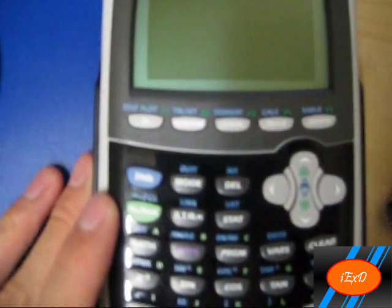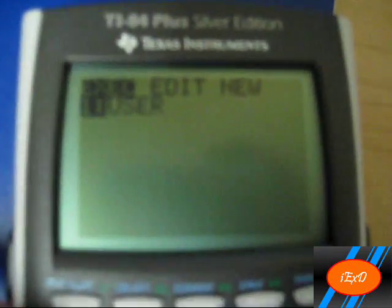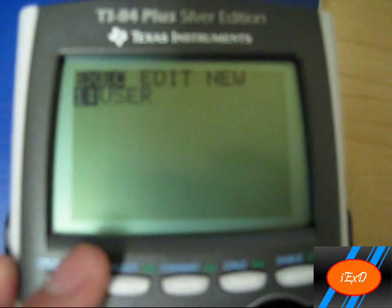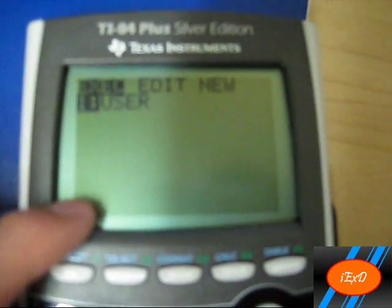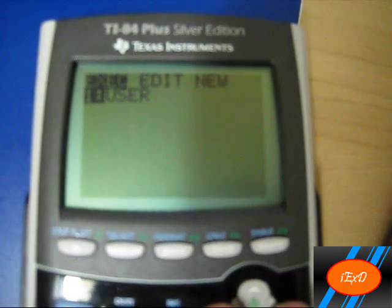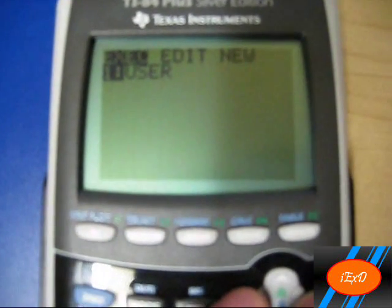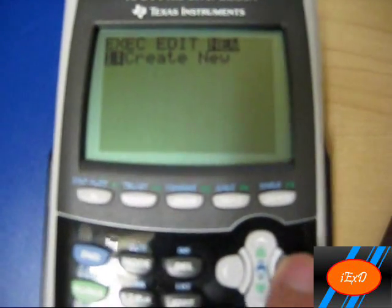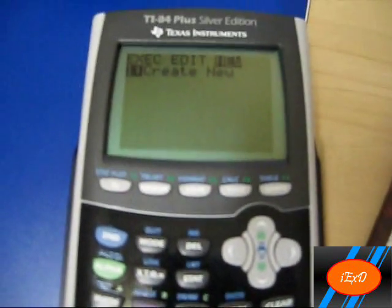First, you would want to obviously turn on the calculator. To begin, click the program button, which is PRGM. This shows all the current programs that my calculator has installed so far. What you want to do is go to New by clicking the arrow button and click Enter.